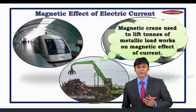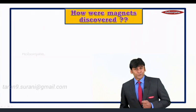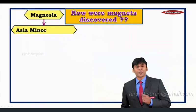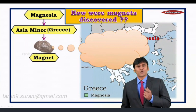To understand the magnetic effect of electric current, let us first begin with the understanding of magnets. How were magnets discovered? Magnets were found in a place called Magnesia, which is in Asia Minor, in Greece. However, it is said that the ancient Chinese found this special stone.